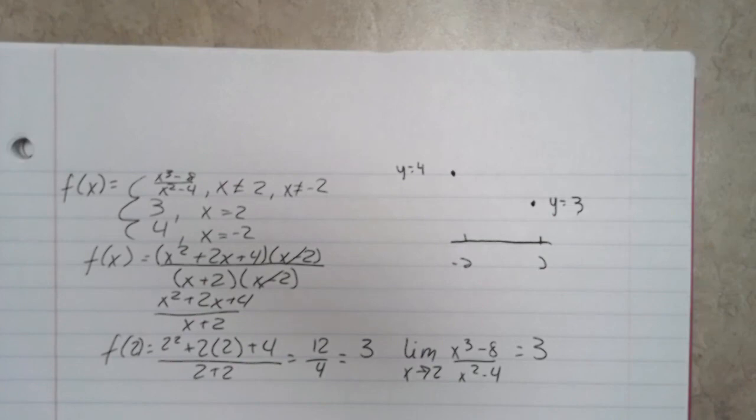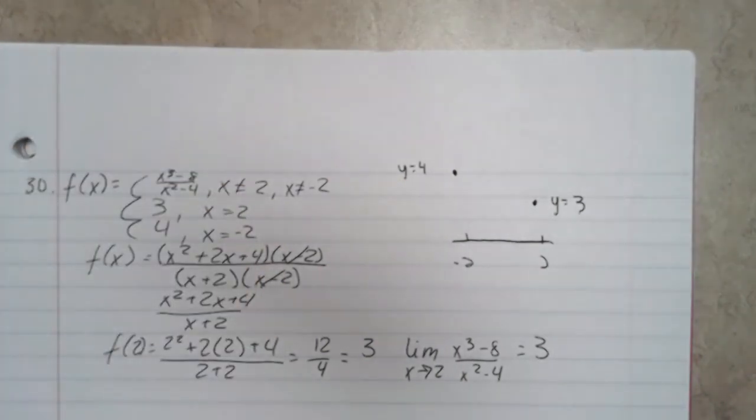At negative 2, the limit doesn't exist. Let me see, at negative 2 the limit doesn't exist. At negative 2 it certainly can't equal 4 and it can't be continuous at negative 2. So that would be the argument I made I guess. This is continuous everywhere except for negative 2 where the limit doesn't exist.